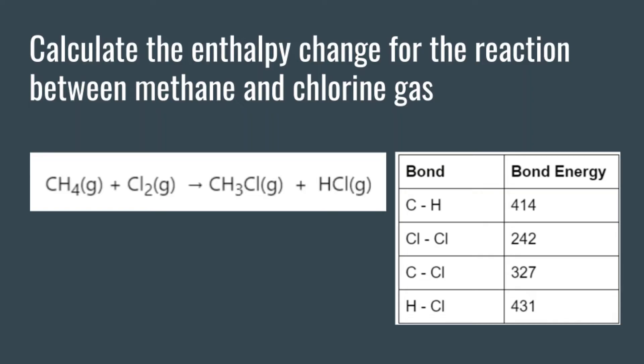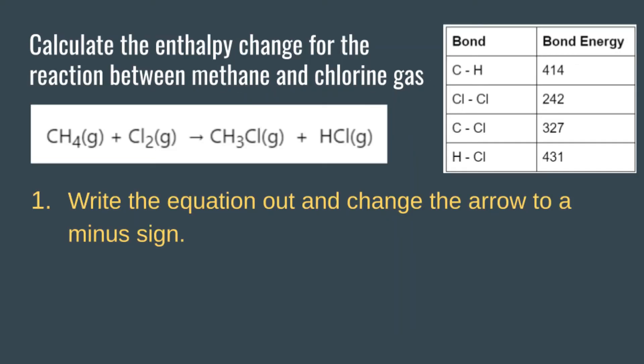In this table we have the different bonds and their bond energies. The C-H bond requires 414 kilojoules of energy to break one mole of C-H bonds, and likewise that much energy is released when one mole of C-H bonds form. The first step in calculating the enthalpy change from bond enthalpy is to write the equation out but change the arrow into a minus sign.